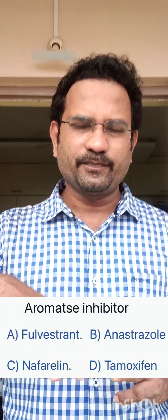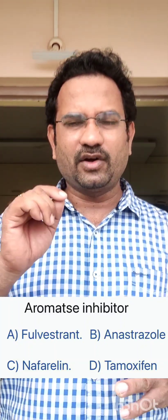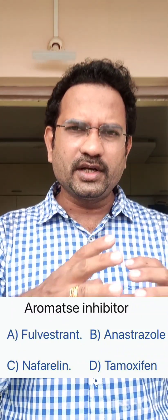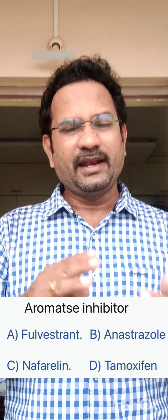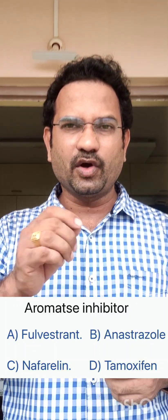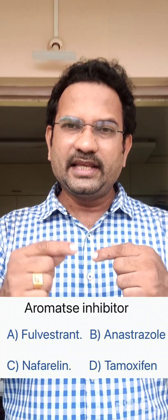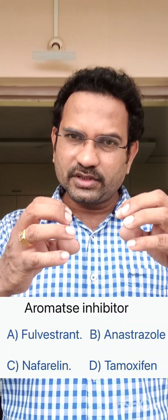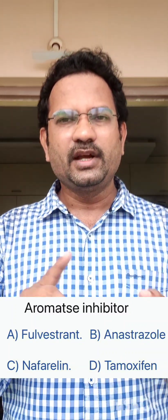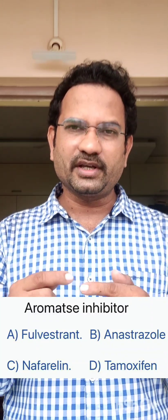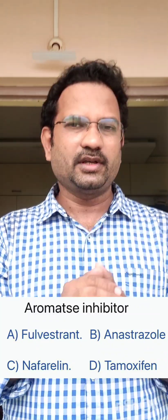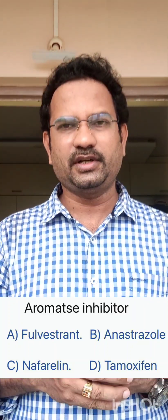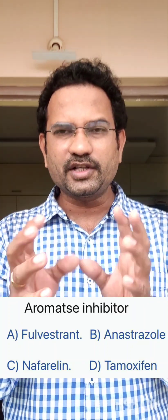Fulvestrant is called a SERD — selective estrogen receptor down-regulator — which down-regulates all estrogen receptors. Nafarelin and goserelin are GnRH analogs (gonadotropin-releasing hormone analogs); they desensitize gonadotropin receptors, reducing FSH and LH release. Tamoxifen is a SERM — selective estrogen receptor modulator — that blocks estrogen receptors in breast tissue but activates estrogen receptors in endometrial tissue, which is why they are called modulators.